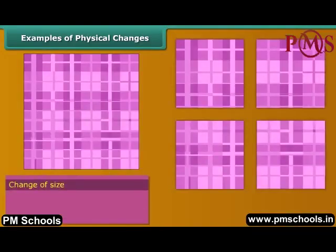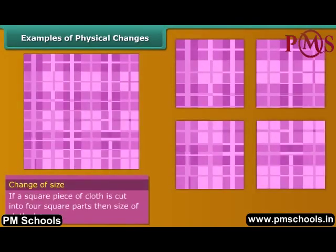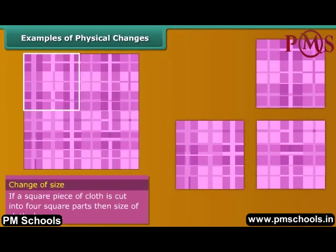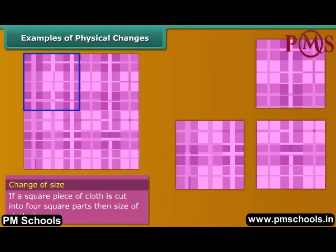Cut a piece of cloth into four square pieces. Now compare the size of one piece of cloth with the original piece of cloth. But the properties of the cloth remain the same. So this is a physical change.